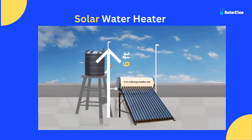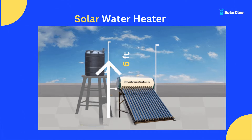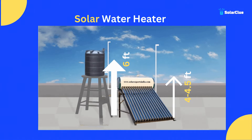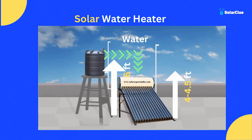For non-pressurized models, there is one more pre-requisite: your overhead tank must be at least six feet higher than the terrace where you plan to install the solar water heater. The reason is that the solar water heater's own height is around 4.5 feet from the terrace, so if the overhead tank is not higher, water will not flow into the unit. Make sure the overhead tank height is maintained.